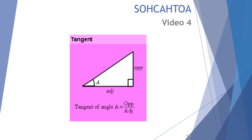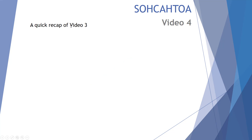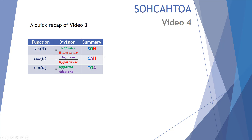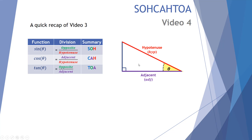Welcome to the fourth video of the Sokotoa series, where we're looking at the three trig functions of a right angle triangle. Today's video is focusing on the tangent function. As a quick recap of video three — which I'd encourage you to watch if you haven't done so already — we were looking at the cosine relationship between the angle and the adjacent and hypotenuse side lengths.